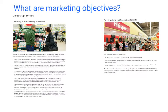When we think about marketing objectives, these are taken from Tesco's website. First of all, we have our marketing objectives here. As we said before, objectives need to meet the SMART criteria to be effective: Specific, Measurable, Achievable, Realistic, and Time-constrained. If an objective is going to be effective, these are the characteristics it needs to meet.